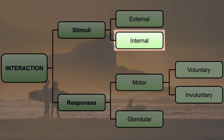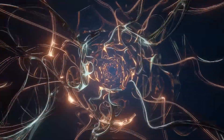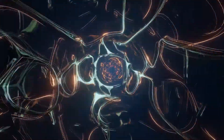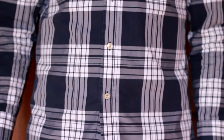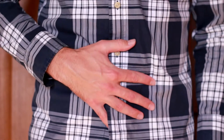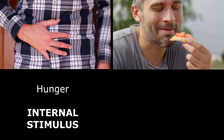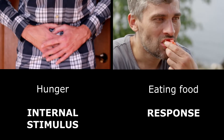Internal stimuli. These come from inside your body. Your body sends signals to let you know something is happening. For example, when you're hungry, your stomach might growl or you feel like you need to eat. That feeling of hunger is the internal stimulus, and eating food would be your body's response.